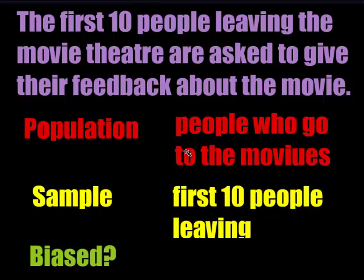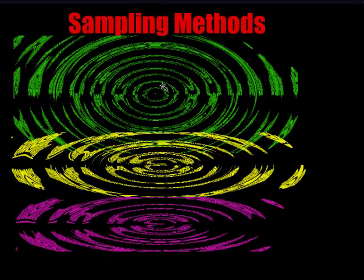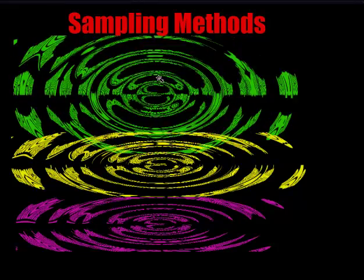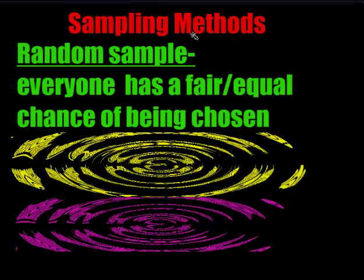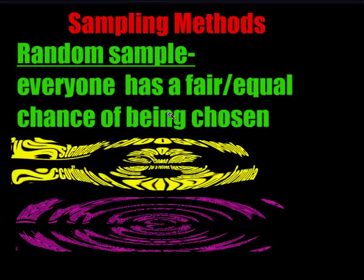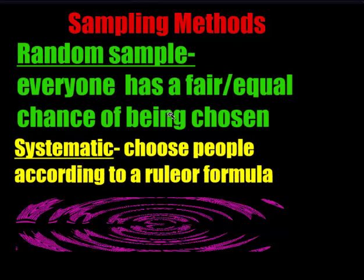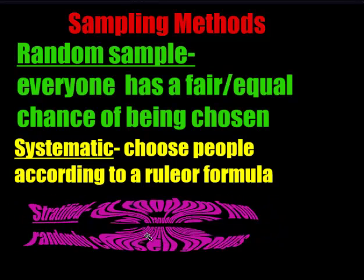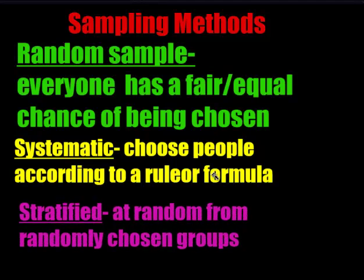Now let's talk about three different ways to actually take a survey — three sampling methods. The first is random, where everyone has a fair, equal chance of being chosen, like winning the lottery or picking popsicle sticks from a hat. The next is systematic, where you have a rule or formula, like selecting every fifth person leaving the movie theater or picking every third person from an alphabetized list. The last is stratified, which is like double random — for example, randomly picking a classroom and then randomly picking three people inside that classroom.